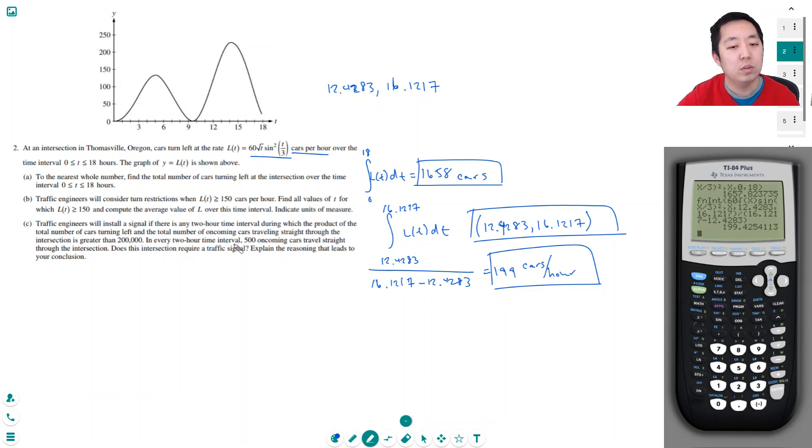I want to know, let's see, when I did this one, which was 12.42, which is about here, to 16. This is a four-hour interval. I'm trying to reason out what they're trying to say. Basically, if this product, product is number of cars times the number of straight, needs to be greater than 200,000.